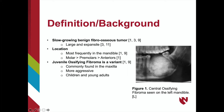They can occur in any craniofacial bone, but are most frequently found in the posterior portion of the mandible, with molar involvement being more common than premolar involvement. There is one variant of ossifying fibromas: the juvenile ossifying fibroma. This variant differs as it is more commonly found in children, is highly aggressive, and more commonly located in the maxilla.